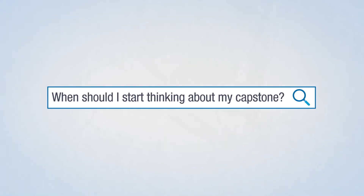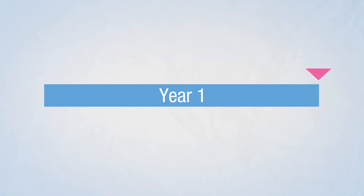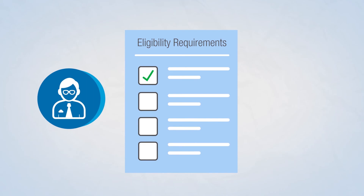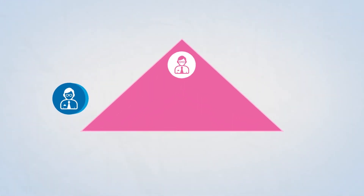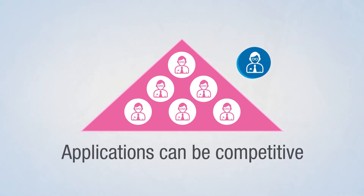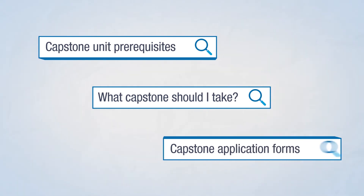When should I start thinking about my capstone? You should start thinking about your capstone after your first year. Some capstone units will have strict eligibility requirements, so check with your course advisor. Depending on your preferred program, there may be limited places and applications can be competitive. Research your preferred capstone ahead of time so you can plan your progression and application.